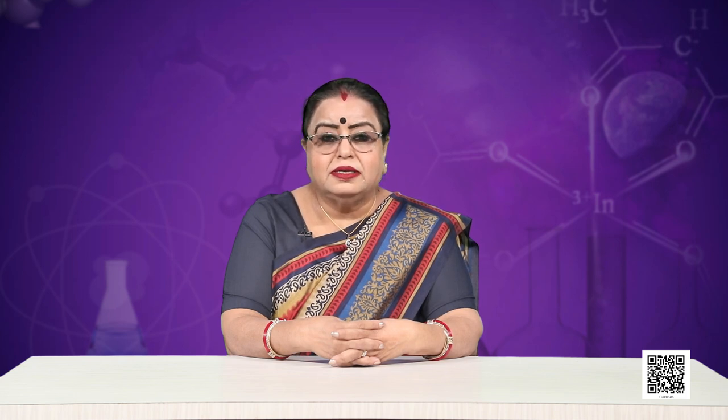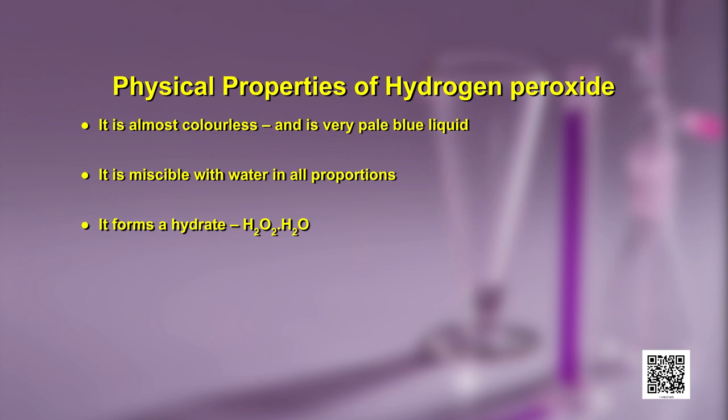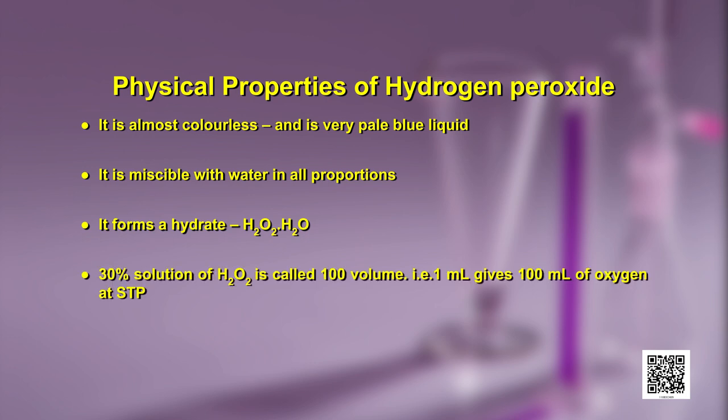After understanding the preparation of hydrogen peroxide, let us know its physical properties and structure. Hydrogen peroxide is an almost colorless liquid with a very pale blue color. It is miscible with water in all proportions and forms a hydrate with water, namely H₂O₂·H₂O. A 30 percent solution of hydrogen peroxide is 100 volume, meaning 1 ml of this solution gives 100 ml of di-oxygen at STP.